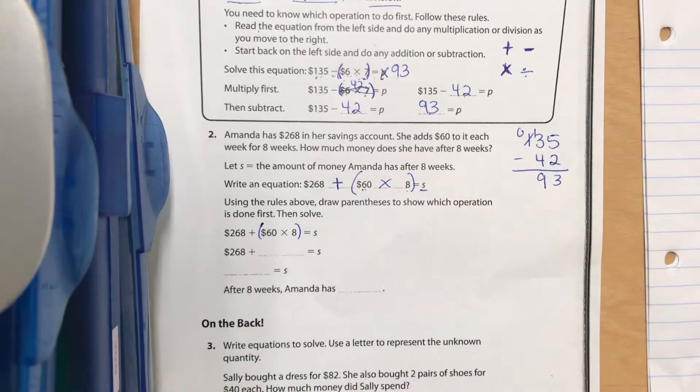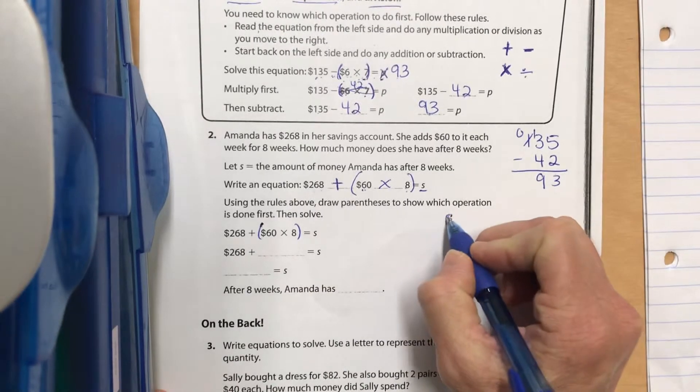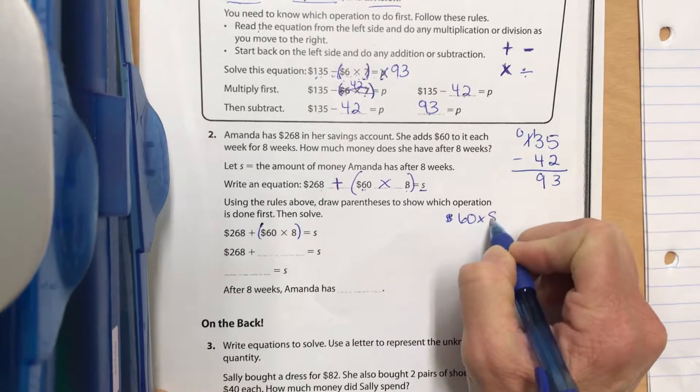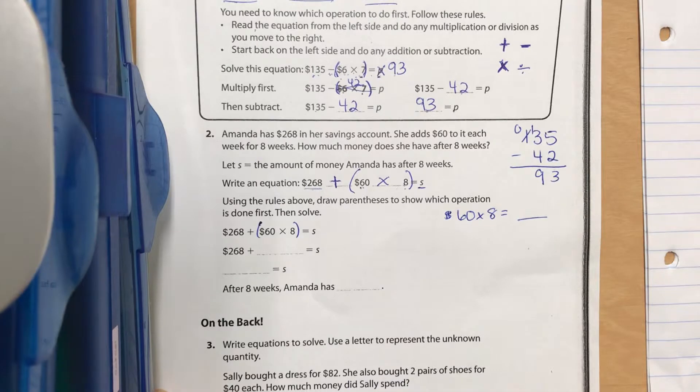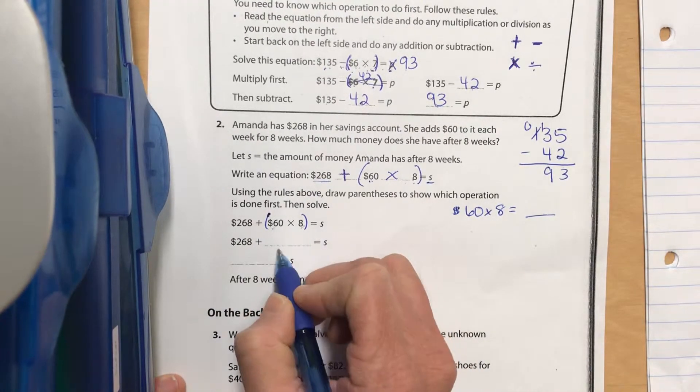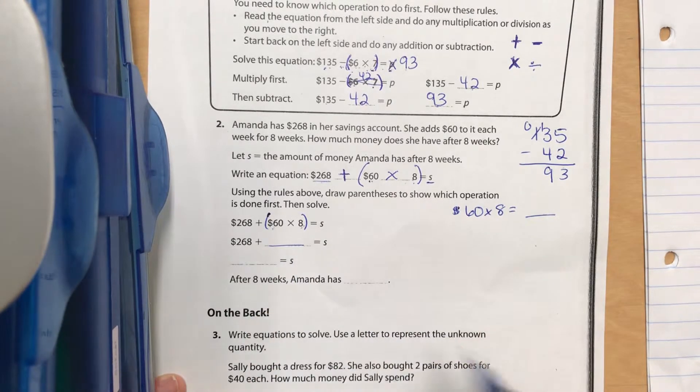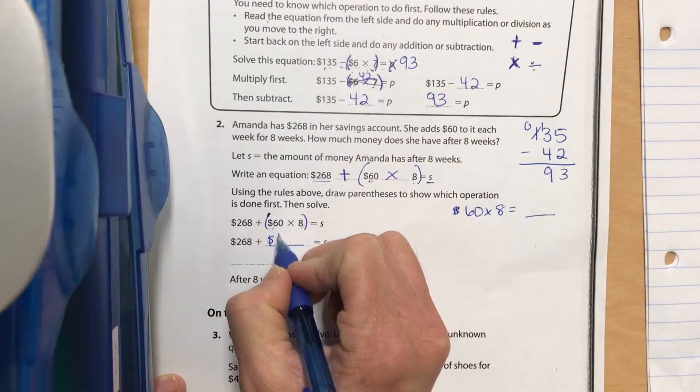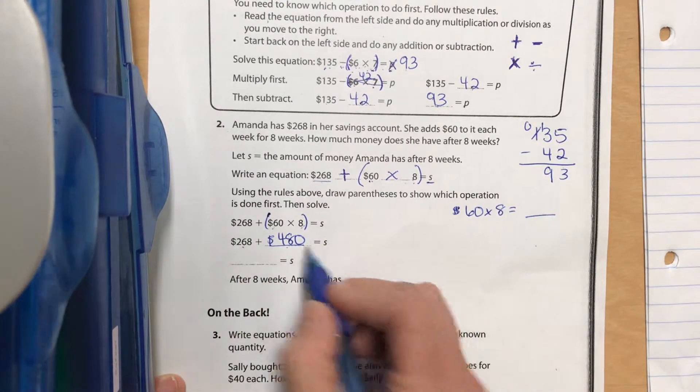She starts out with 268 plus she's going to add eight groups of 60. That's going to be a multiplication. Every week she's going to put $60 in there for eight weeks. Then we're going to add that amount to this 268. It's basically a two-step problem.